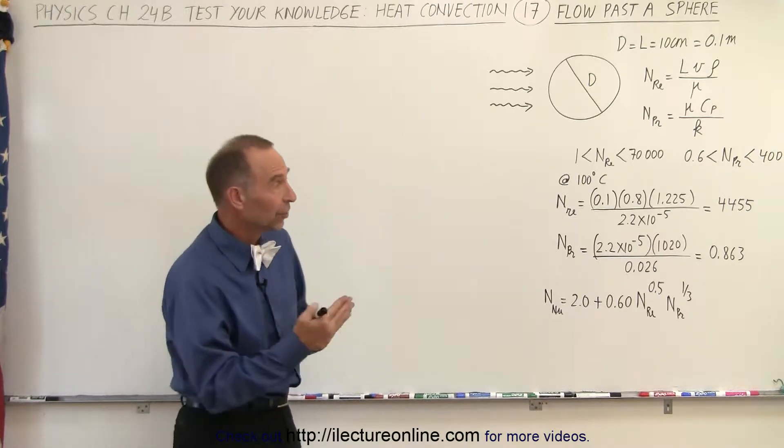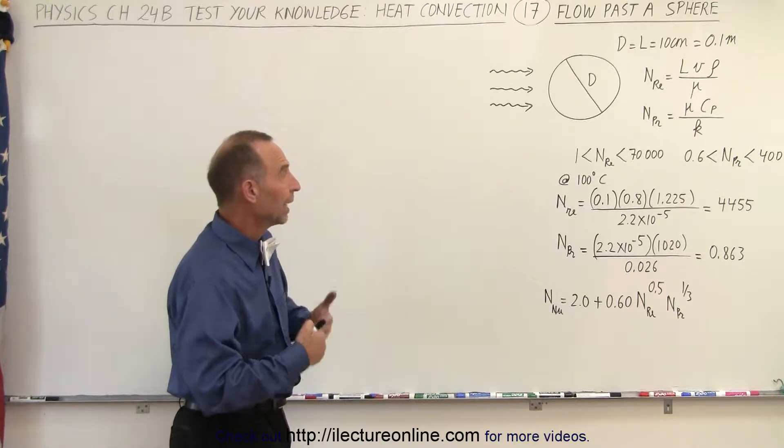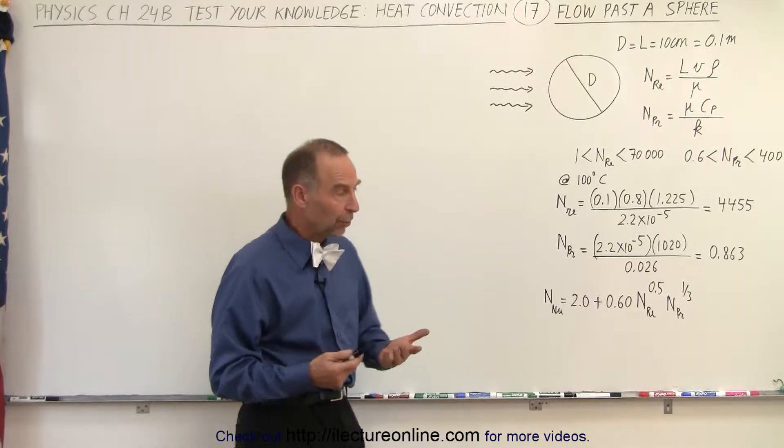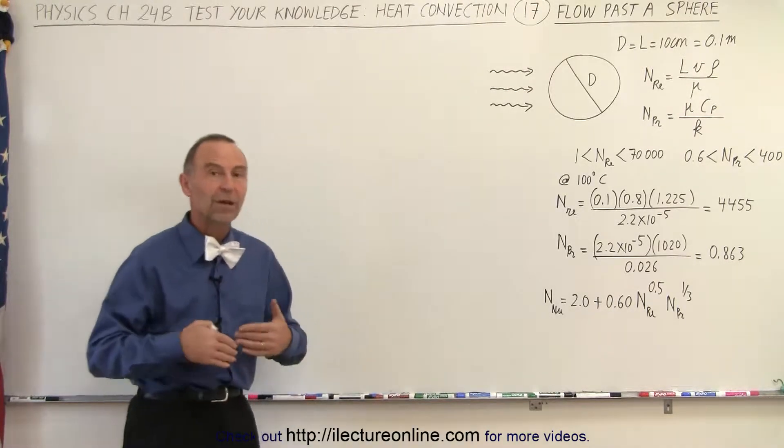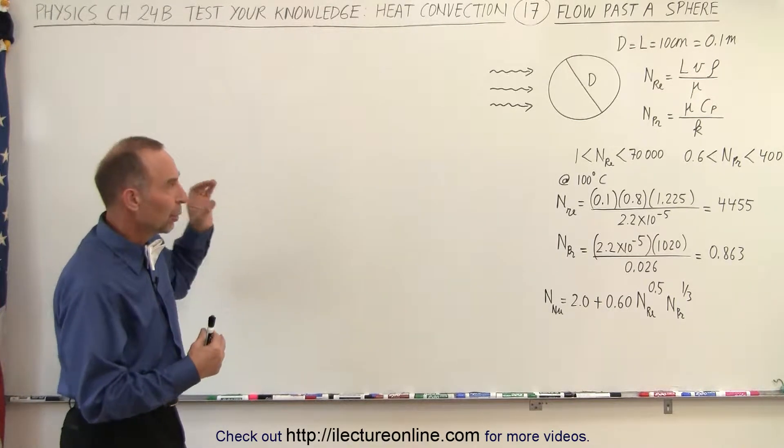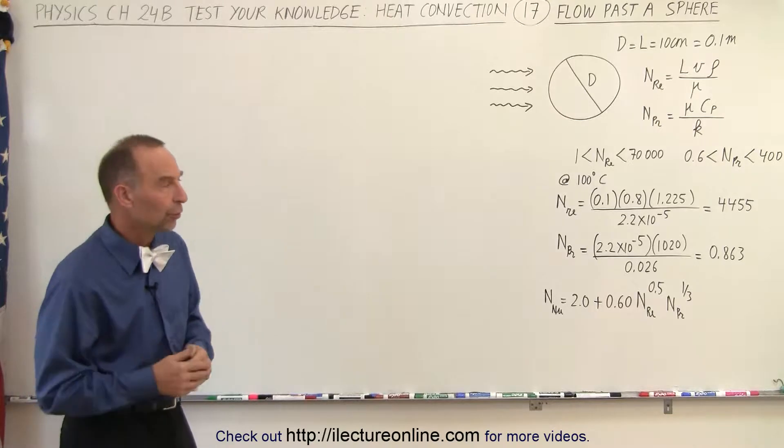Notice we still need to calculate the Reynolds number and the Prandtl number in order to calculate the Nusselt number. Once we have the Nusselt number we can go ahead and find the transmission coefficient, and then from that we can calculate the amount of heat flow from the sphere when a certain amount of air flows over the sphere.